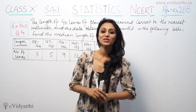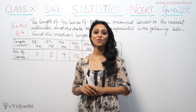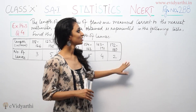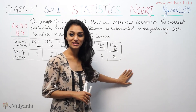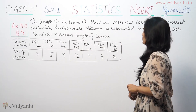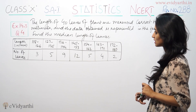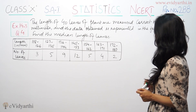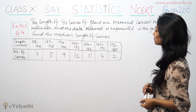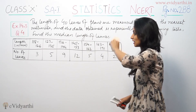Hey, what's up, this is Krish Poo with another question of Statistics. This is question number 4, size 14.3, page number 288 from chapter XIV. The question is: the length of 40 pieces of plant are measured correct to the nearest millimeter, and the data obtained is represented in the given table. Find the median length of the piece.